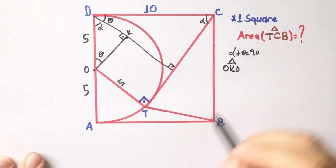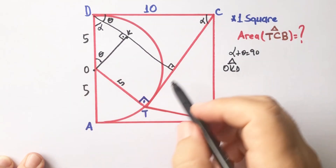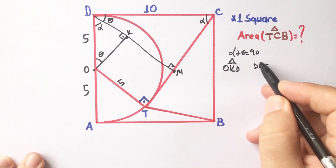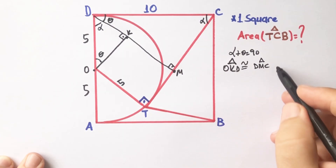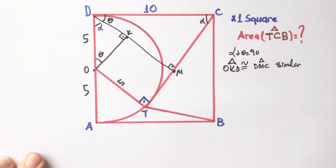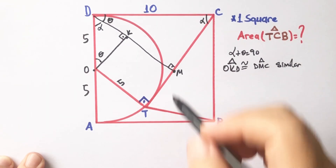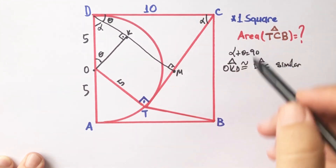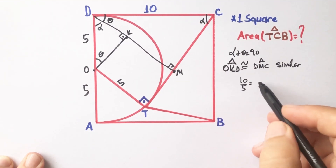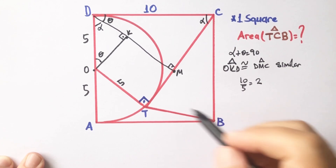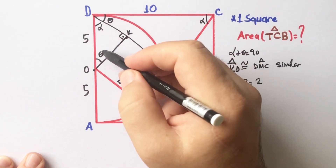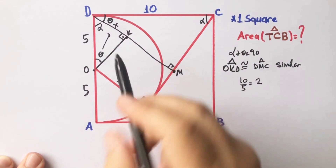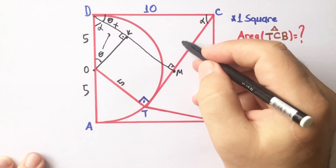Triangle OKD and triangle DMC are similar because they have the same angles. The ratio of the lengths opposite the 90-degree angles are equal. So if the side opposite theta equals x, then the corresponding side opposite theta must also equal x.